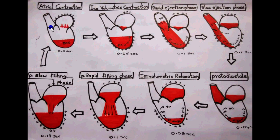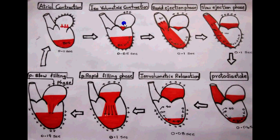Now the impulses go to the ventricles via the conducting system and the ventricles start to contract. Due to this contraction, the pressure increases slowly from 0 to 5, then to 80 millimeters of mercury, which is higher than the pressure in the atria, and the blood tries to go back to the atrium. In order to prevent this, the bicuspid valve closes.